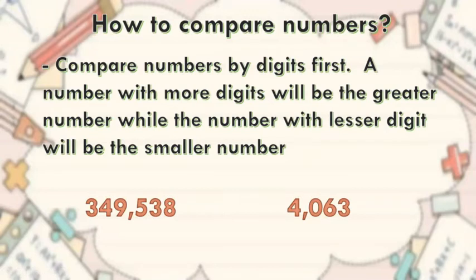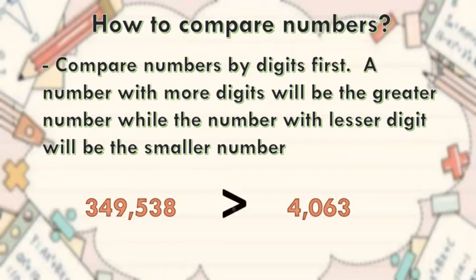How about 4,063? One, two, three, four. 4,063 has four digits. Six is more than four. Therefore, 349,538 is greater than 4,063.